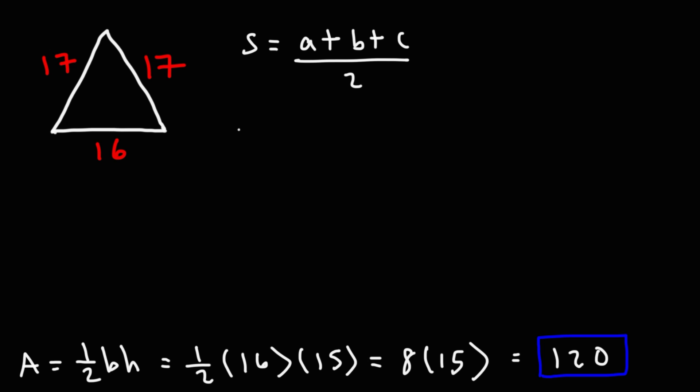Now, a, b, and c, those are the three side lengths of the triangle. So, we could say that a is 16, b is 17, and c is 17. Now, once you have s, you can calculate the area using this formula. It's the square root of s times s minus a times s minus b times s minus c.